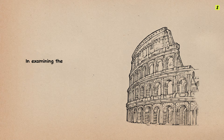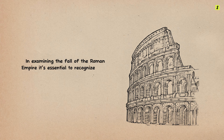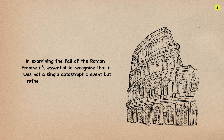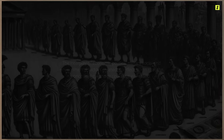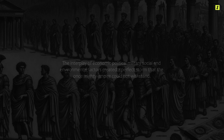In examining the fall of the Roman Empire, it's essential to recognize that it was not a single catastrophic event, but rather a gradual process of decline and transformation. The interplay of economic, political, military, social, and environmental factors created a perfect storm that the once mighty empire could not withstand.